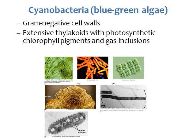Cyanobacteria have gram-negative cell walls, so if you do a gram stain on them they'll be pink in color. They have extensive thylakoids, which are the part of the cell that can do photosynthesis. These thylakoids have photosynthetic chlorophyll pigments and gas inclusions. Many cyanobacteria also have inclusion bodies used to store food, and they have blue or green pigments, which is why they're called blue-green algae.